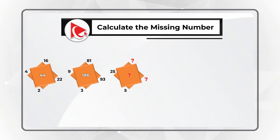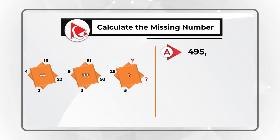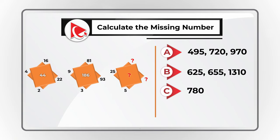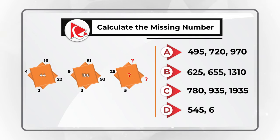The four possible answer choices are: choice A — 495, 720, and 970; choice B — 625, 655, and 1310; choice C — 780, 935, and 1935; and choice D — 545, 610, and 1000. Typically you get between 20 and 30 seconds on the real test, so feel free to pause if you need more time.